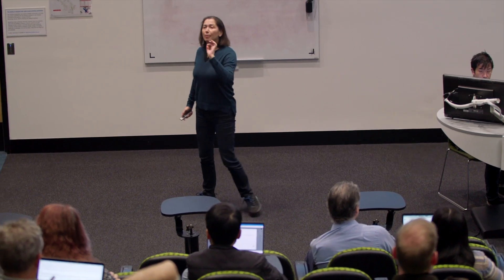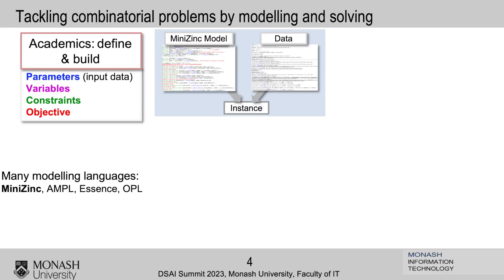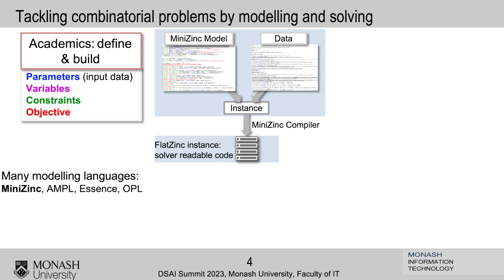For example, a particular instance is when I go from Clayton to Caulfield, or another instance is when I go from Clayton to my house — each requires different data. Then, because I'm using a high-level modeling language with very high-level mathematical constraints, I need my modeling language to compile it down into something that the solvers can understand.